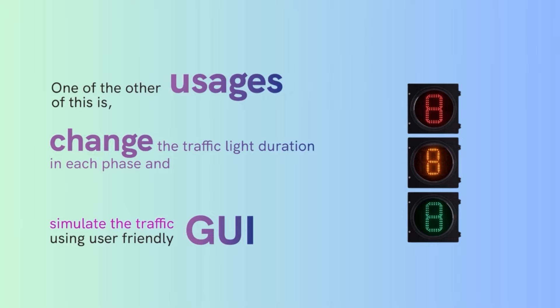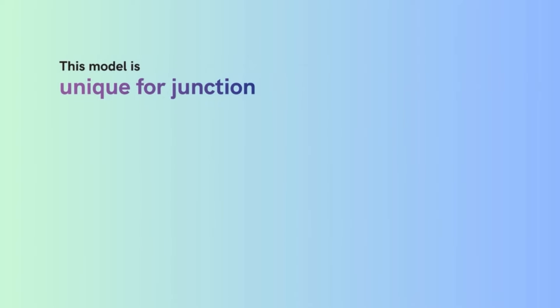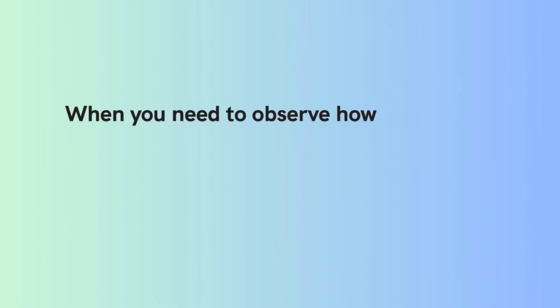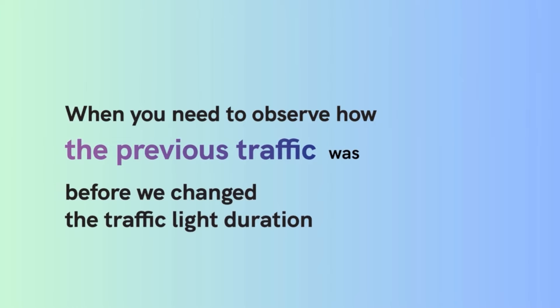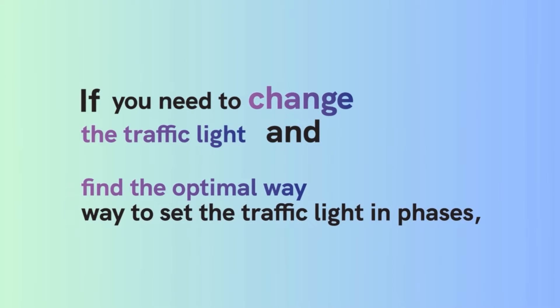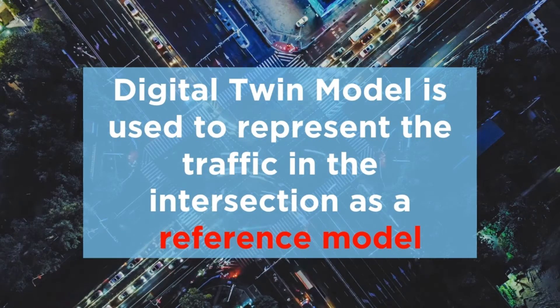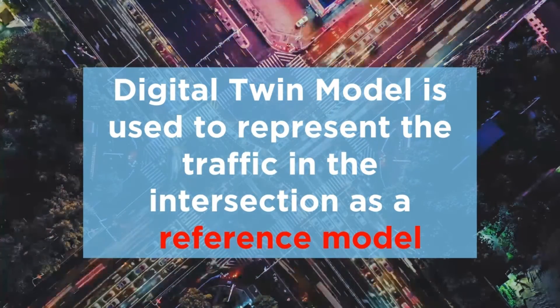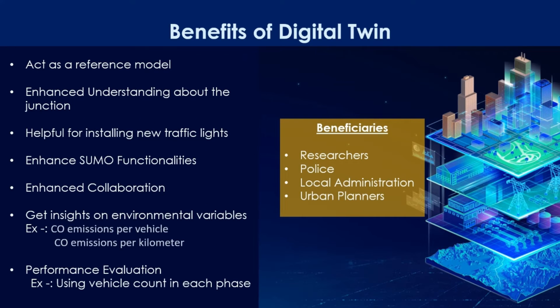Using a user-friendly GUI, this model is unique to the junction. You can select the junction type here — let's select four-way. To observe how the previous traffic was before we changed the traffic light duration, click the 'Run as Default' button. If you need to change the traffic light and find the optimal phase settings, you can enter values for each phase and view the SUMO simulation.